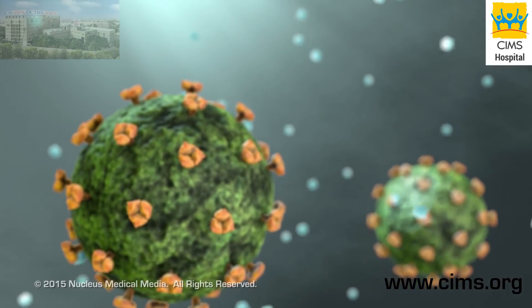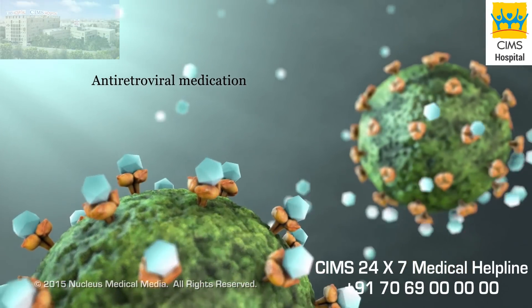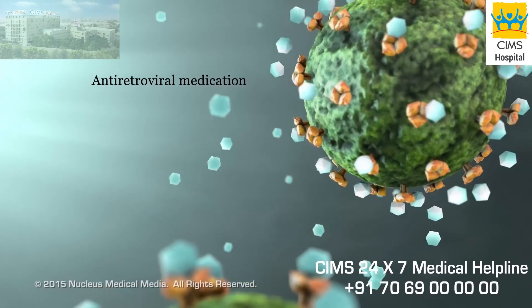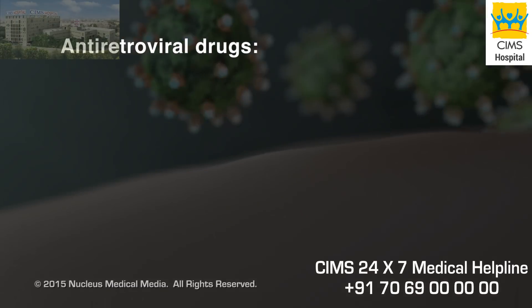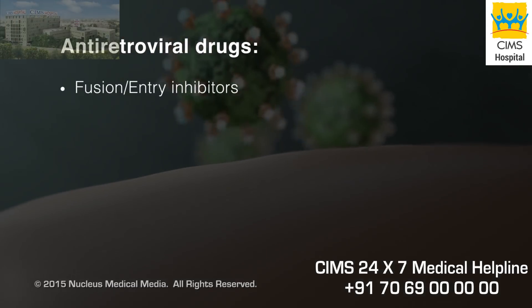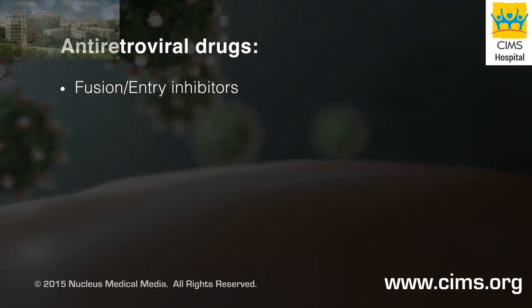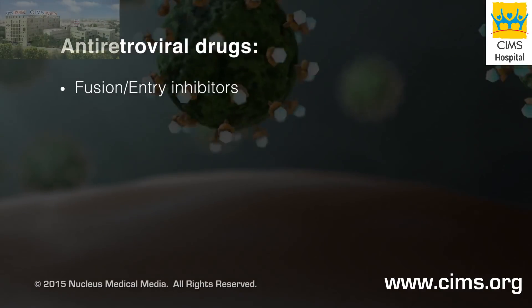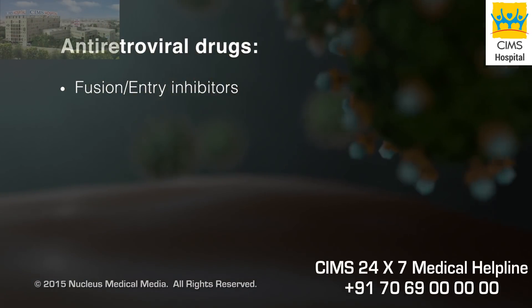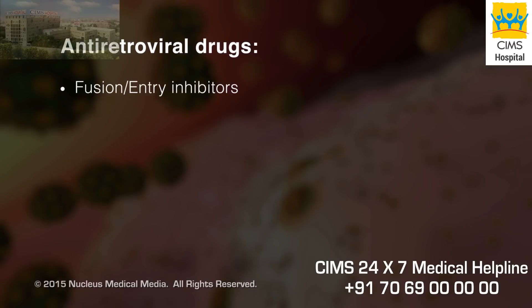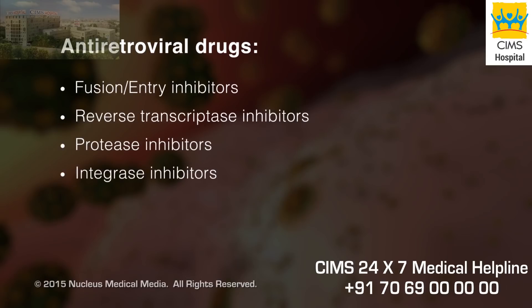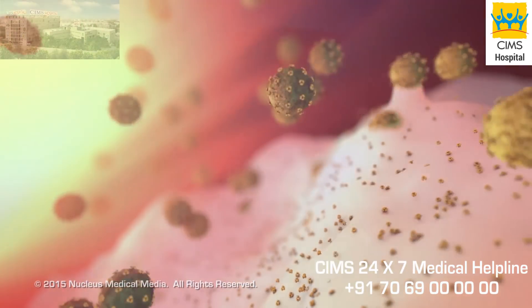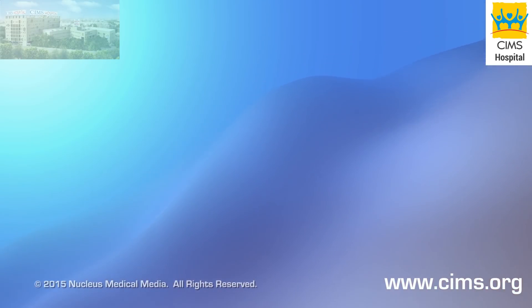Although there is no cure for HIV, drugs called antiretroviral medications can reduce the amount of HIV in your body. One class of antiretroviral medication called entry or fusion inhibitors disrupts the HIV infection process by preventing the virus from attaching to your cells. Other classes of antiretroviral medications include reverse transcriptase inhibitors, protease inhibitors, and integrase inhibitors. These drugs prevent the creation, assembly, and spread of new viruses.